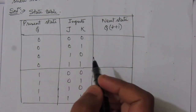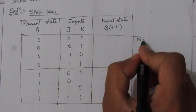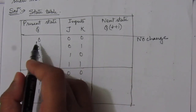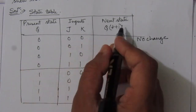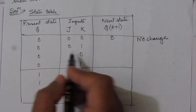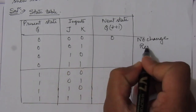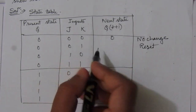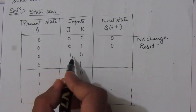For present state zero and inputs zero-zero, in the case of a JK flip-flop we have no change for zero-zero input, so the next state will be the same as the present state — we'll have zero here. When J is zero and K is one, we'll have reset, so we'll have zero here.